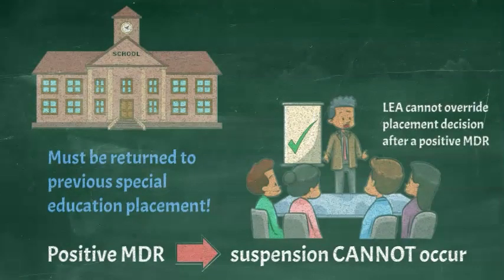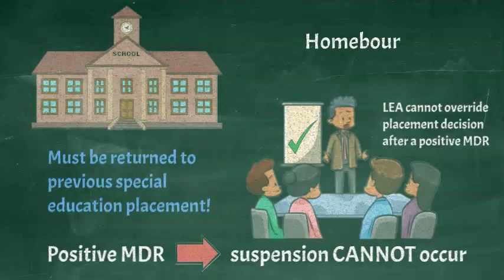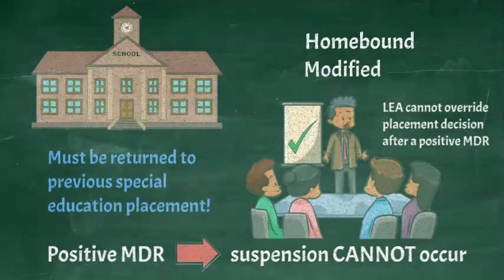We see this situation come up a lot where the school will agree that the MDR is positive but try to change the child's placement to homebound or modified day over a parent's objection, because they are concerned about the behaviors that led to suspension.